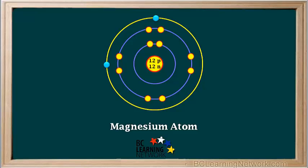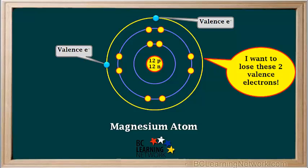Here is the Bohr model for a magnesium atom. The valence shell is shown as a large yellow circle, and you can see that a magnesium atom has two valence electrons, shown by the two small blue circles. Elements with one to three valence electrons tend to lose their valence electrons and form ions with noble gas electron arrangements. So a magnesium atom will readily lose its two valence electrons.